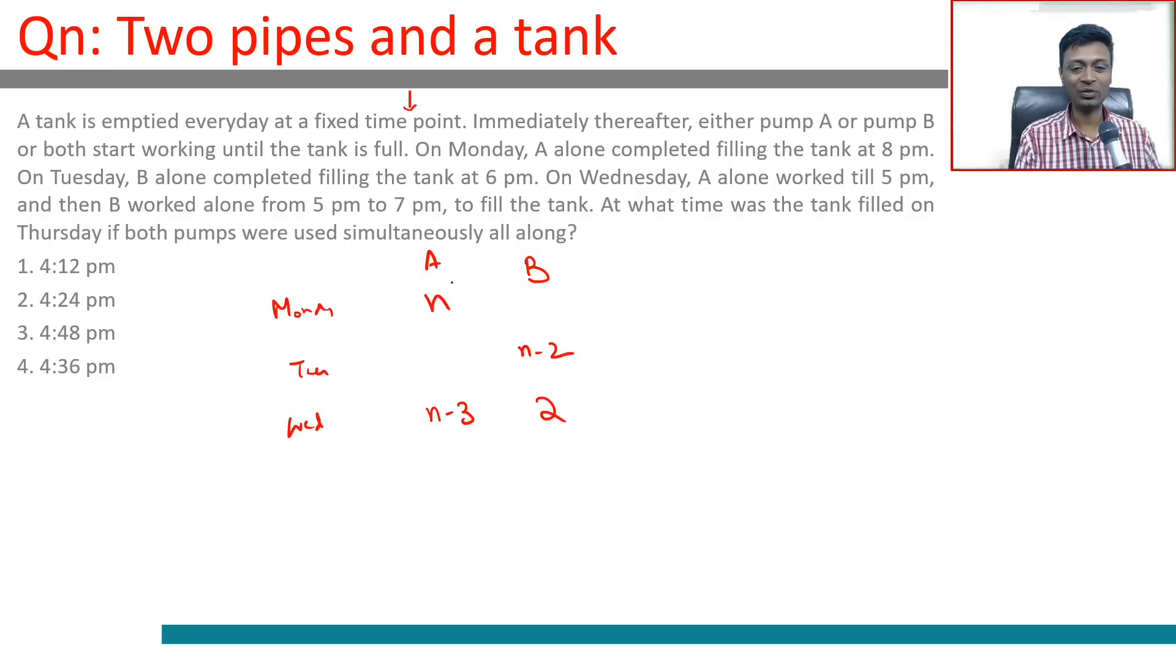So A takes n hours to fill the tank. N hours of A can fill the tank, n minus two hours of B can fill the tank, n minus three hours of A and two hours of B can fill the tank. A is doing three hours less work on Wednesday which B completes in just two hours, or B is 1.5 times as good as A.